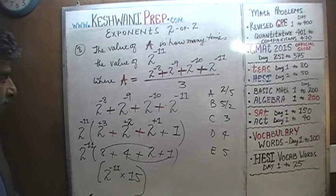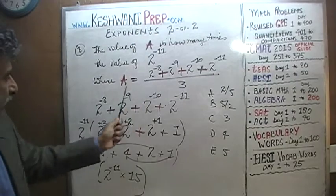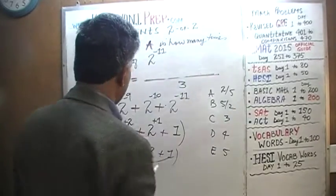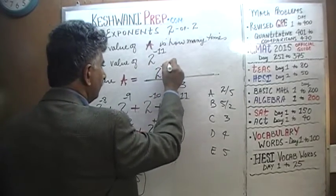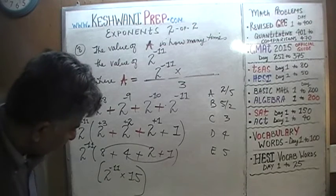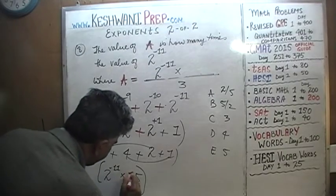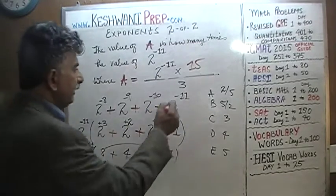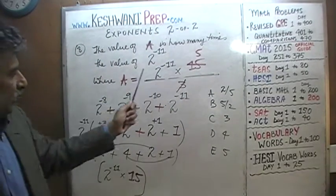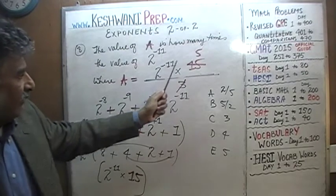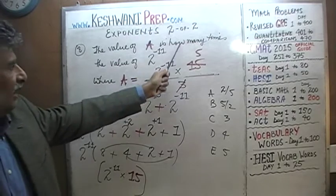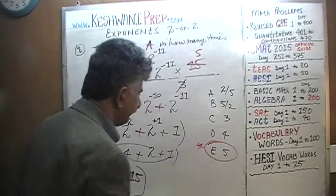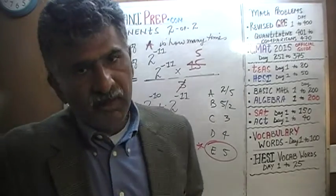So the full numerator — 2 raised to negative 8 plus 2 raised to negative 9 plus 2 raised to negative 10 plus 2 raised to negative 11 — equals 2 raised to negative 11 times 15. We divide top and bottom by 3, so 15 becomes 5. Therefore A equals 5 times 2 raised to negative 11. The question was: A is how many times 2 raised to negative 11? The answer is 5, which is answer choice E.